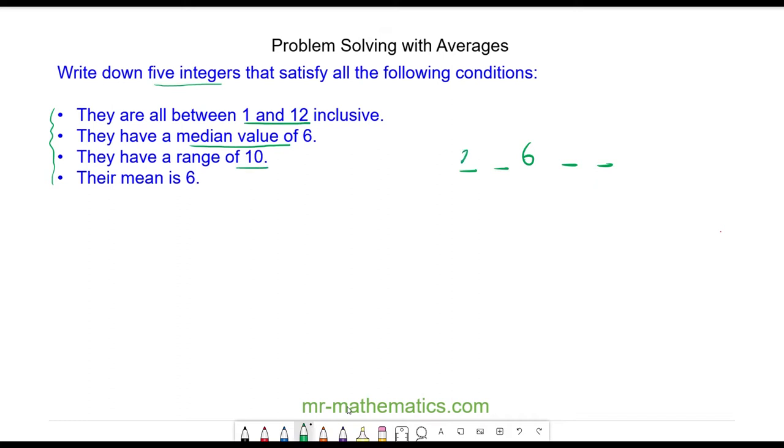So we can begin with a minimum of 2 and a maximum of 12 which gives a range of 10. We are also told the mean is 6, which means all five numbers have to add up to 30 because 30 divided by 5 would give the average of 6.